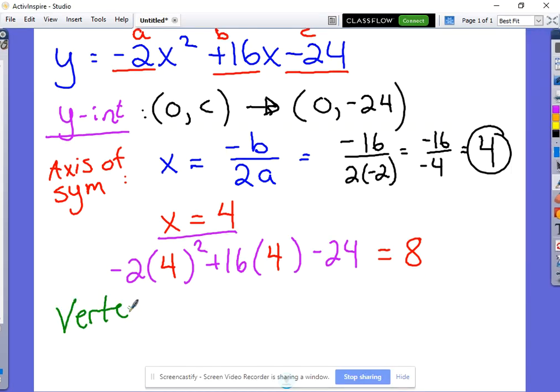So our vertex, that most important point of a parabola in this particular case is the x value was 4, comma, the y value was 8. All right, so there's our vertex. So that's a really good start to actually determining what our parabola looks like.